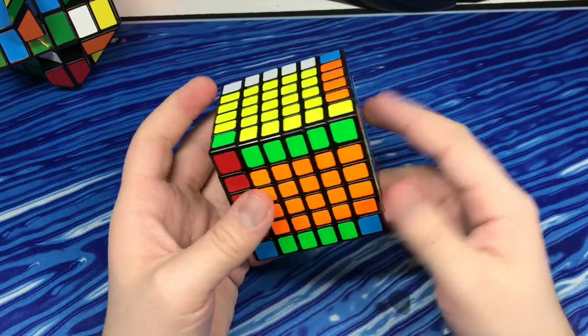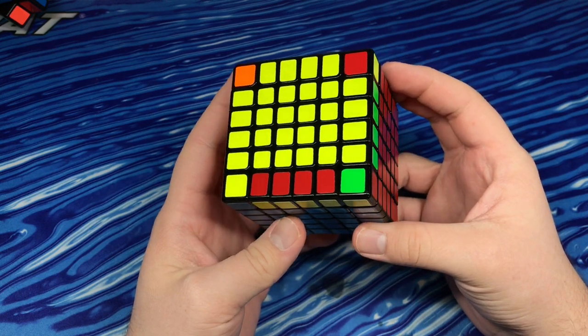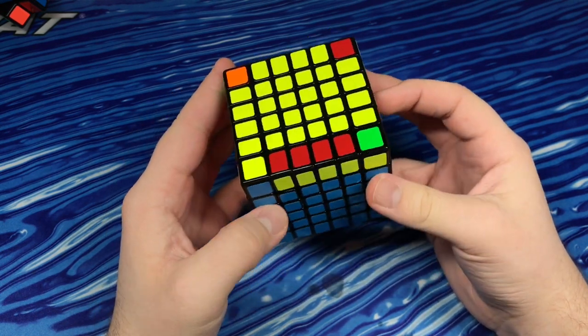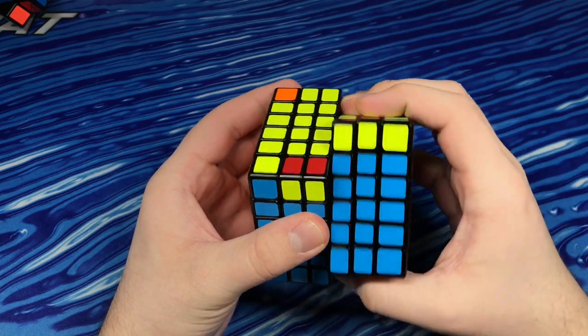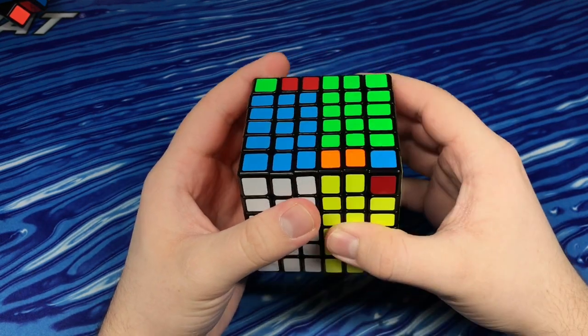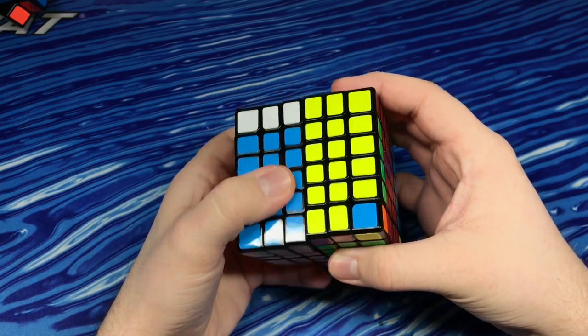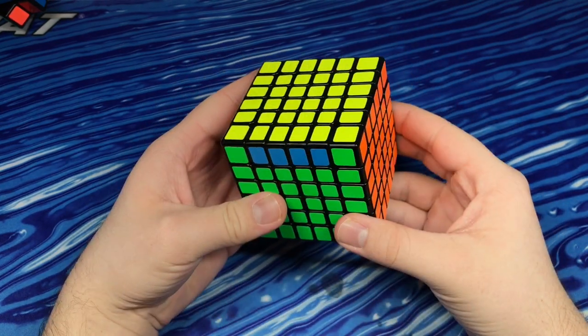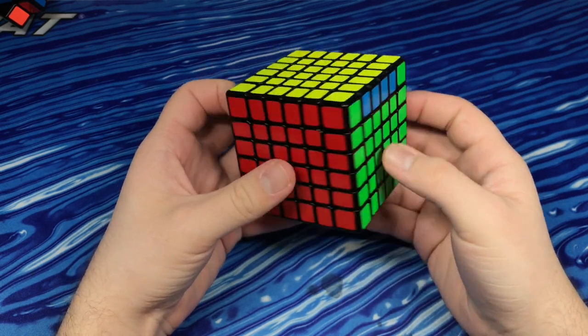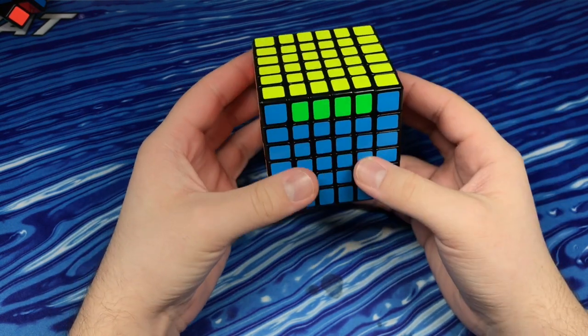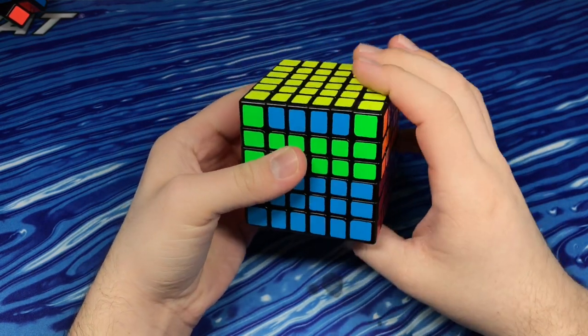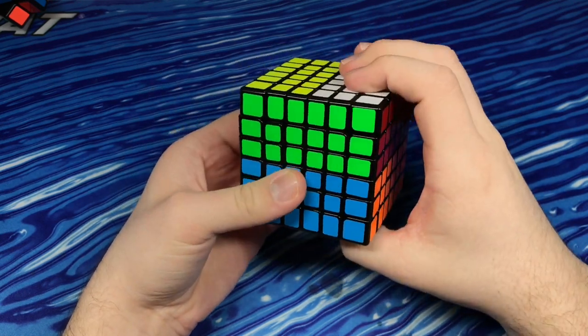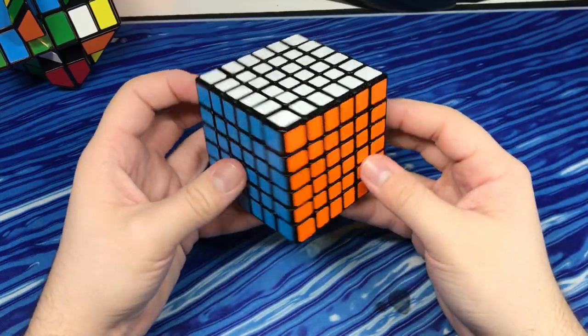And then now it's just 3x3 stage. Okay, and then for 6x6, you might end up with OLL parity. So this is the same algorithm as the 4x4. So it goes like this. Rotation. Okay, and then you might end up with PLL parity as well. I already covered this in another video, but I'll just go ahead and show what it looks like. And now your cube should be solved.